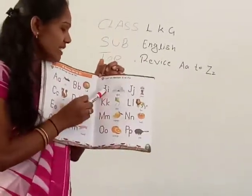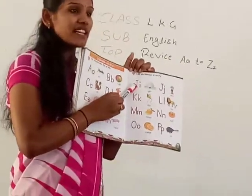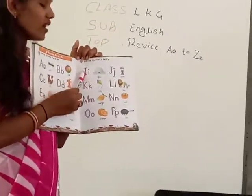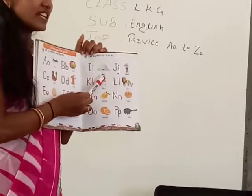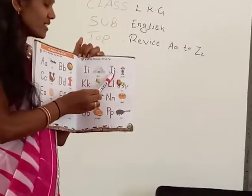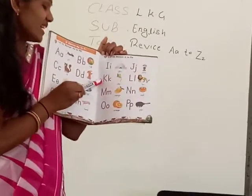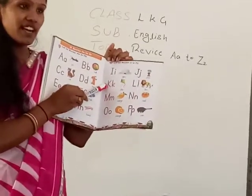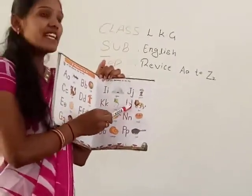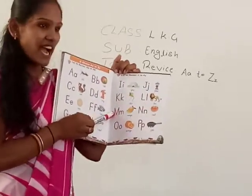And now, what is this? Very good. I for? J for? Joker. Joker. K for? N for? Lion. Lion.